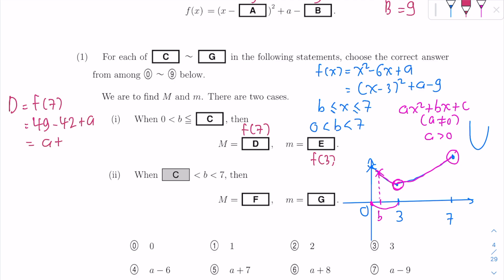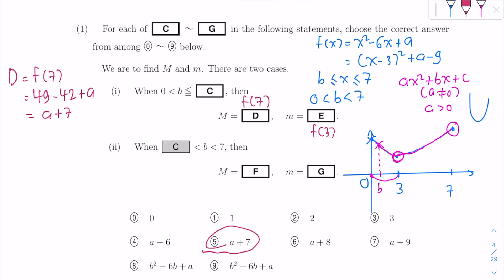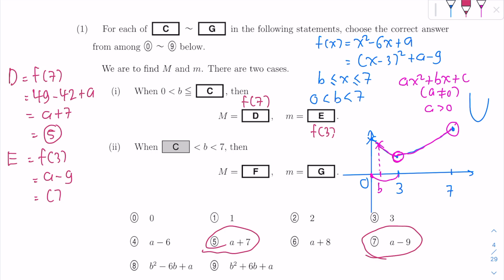A plus 7 is the value for D. And E equals f of 3: substituting gives 3 minus 3 squared equals 0, so you get A minus 9. Therefore E equals A minus 9. We also know that C, the boundary value between the two cases, is 3. So C equals 3.